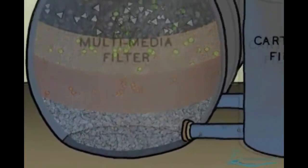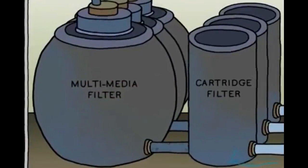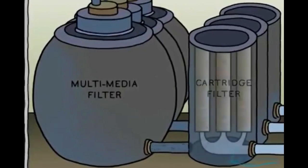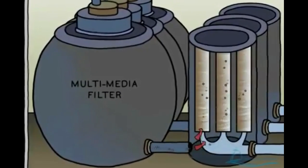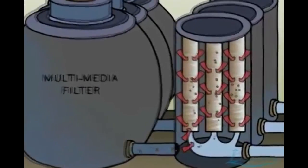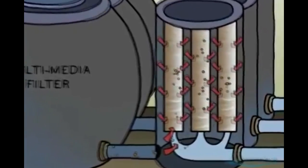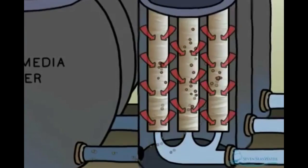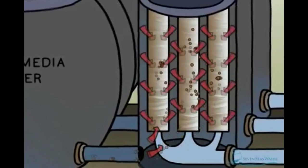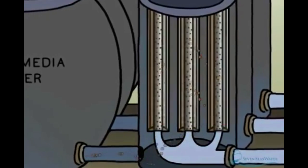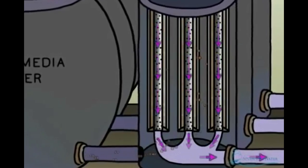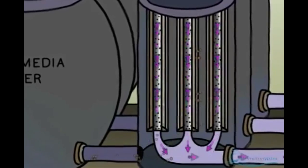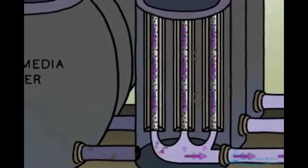Next, the filtered seawater travels to the cartridge filters, which act as a second stage of filtration. Cartridge filters used for seawater reverse osmosis are typically made from a yarn-like synthetic material that is wound into cartridges. These remove even smaller solid particles from the seawater, such as fine sand and clay, before the seawater proceeds to the reverse osmosis membranes.